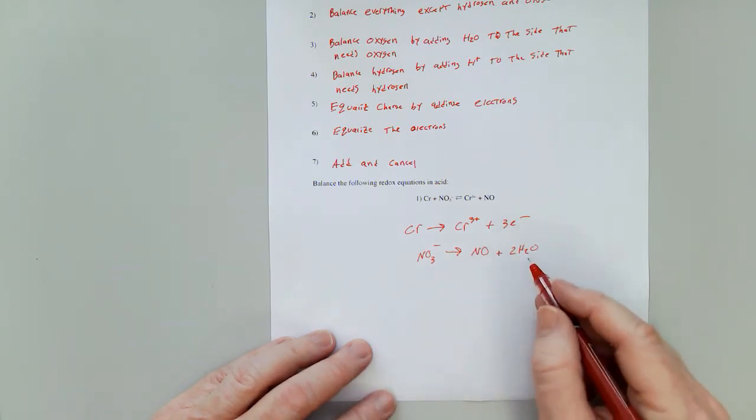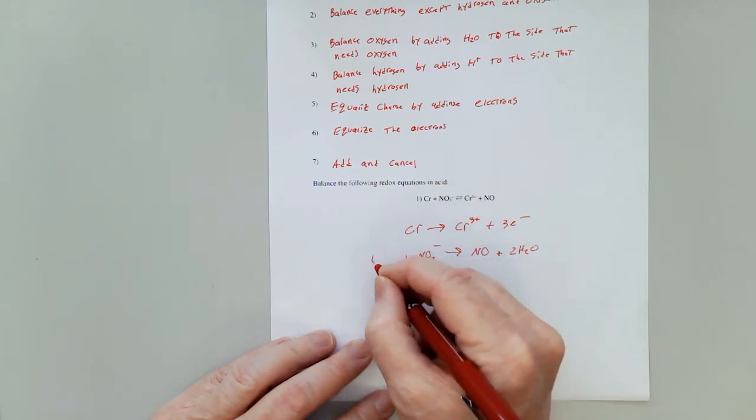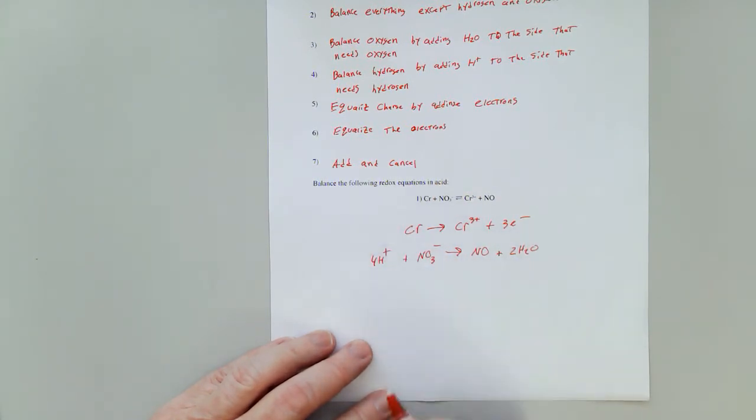Now, to balance the hydrogen, two times two is four. So on this side, I'll put four H plus.